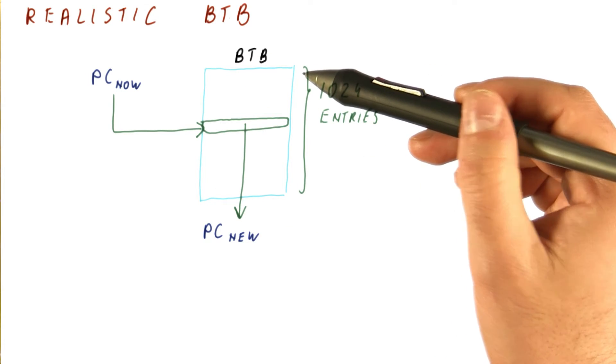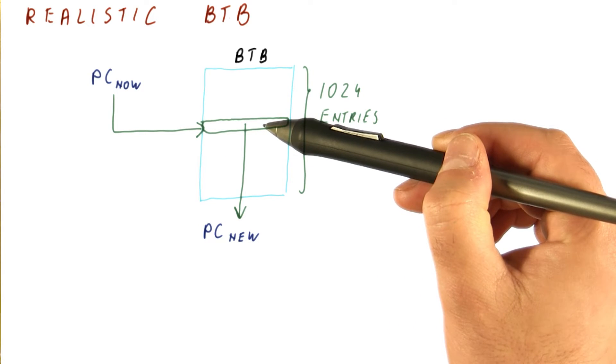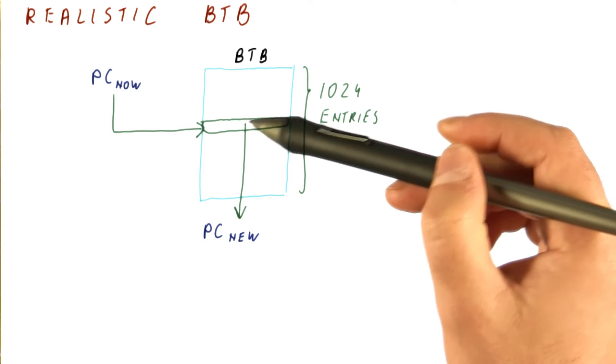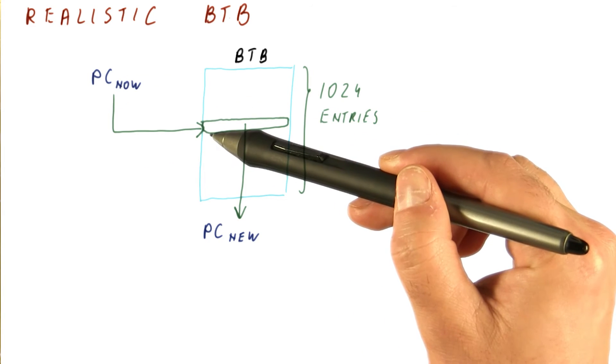The question is now, there are many, many possible PCs. How do we map each PC to an entry in a way that avoids conflicts among different PCs that map to the same entry?